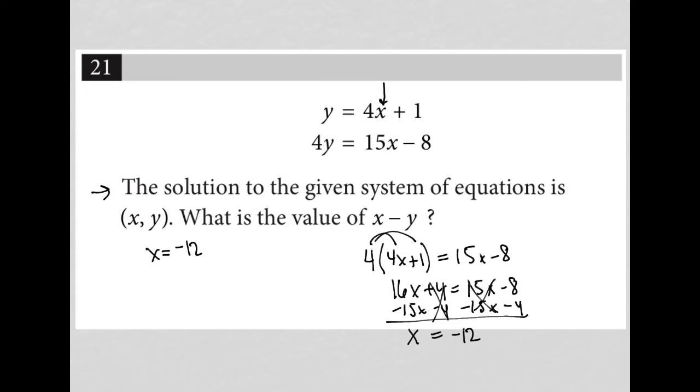Now that I know that x is negative 12, I can convert this into 4 times negative 12 plus 1, which is negative 48 plus 1, which is negative 47.